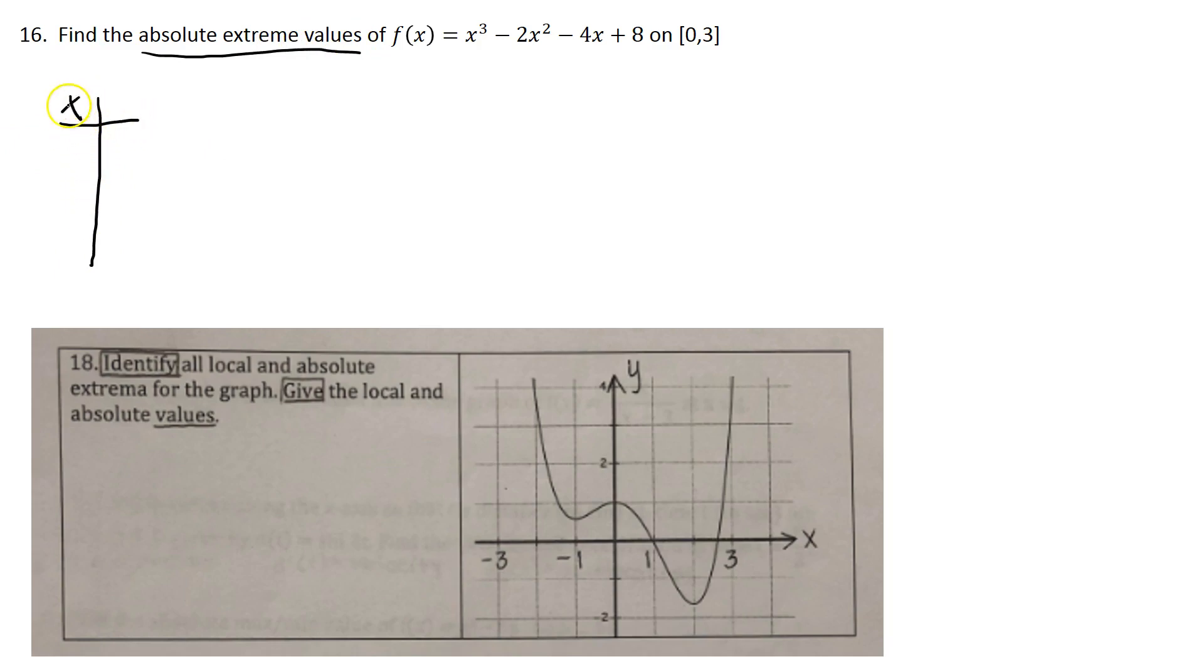The absolute extreme values are either going to occur at the endpoints, so go ahead and put them in there, or in between those endpoints at any critical numbers. We have to look for the critical numbers that occur inside of our interval.